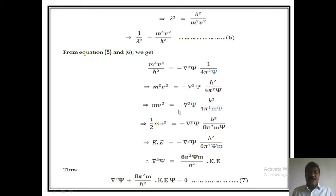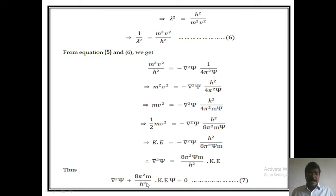This implies mv² = −∇²ψ × (h²/4π²mψ). Therefore, KE = −∇²ψ × (h²/4π²mψ), which gives KE = −∇²ψ × (h²/8π²mψ). Therefore, ∇²ψ = −(8π²mψ/h²) × KE, and thus ∇²ψ + (8π²m/h²) × KE × ψ = 0. This is equation number 7.